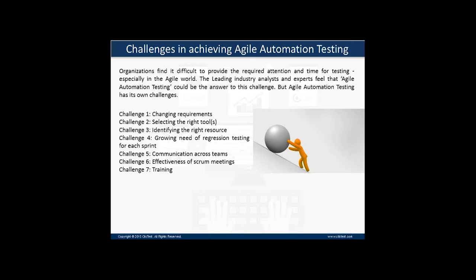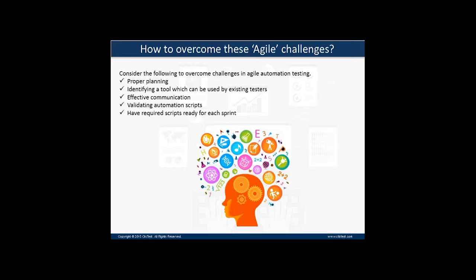Now let's discuss aspects that allow us to overcome these challenges. Planning should be proper, because as we are talking about sprints which usually happen for two to four weeks, planning plays a very key role. Before the sprint begins, it has to be properly defined what activities the development team and testing team will perform, what part of the application will be automated, and all required automation scripts should be ready in that particular sprint with no lag or backlog carried into the next sprint.